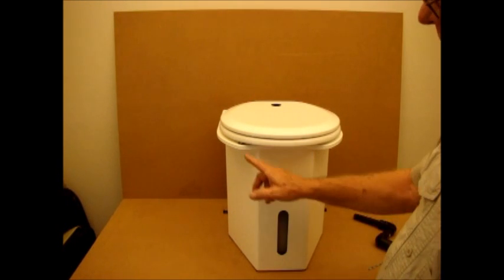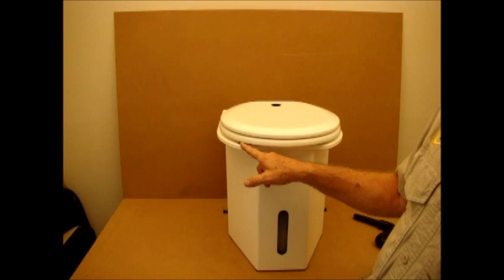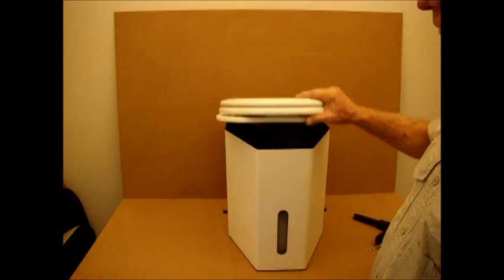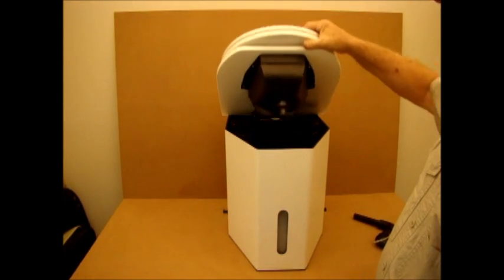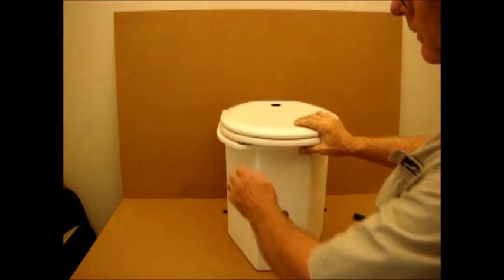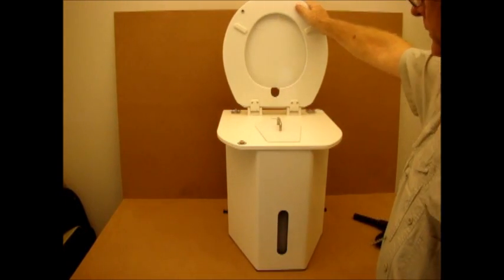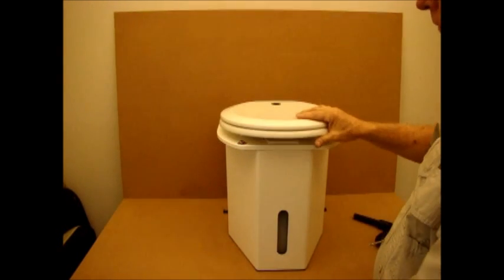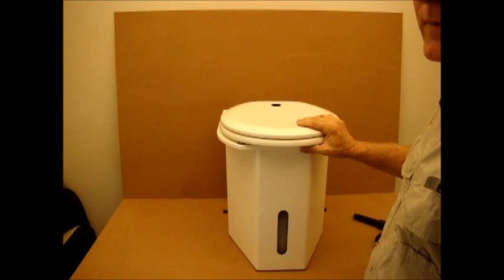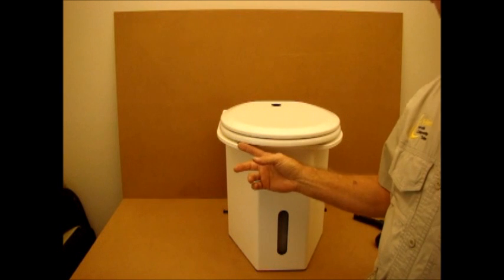One other feature I want to point out is you'll notice there's a snap mechanism here that allows you to open the housing by simply lifting the toilet seat. To get to clean underneath, you simply snap it loose like this, do your cleaning, turn it back into place, and snap it back down. This will happen automatically when you sit on the toilet.